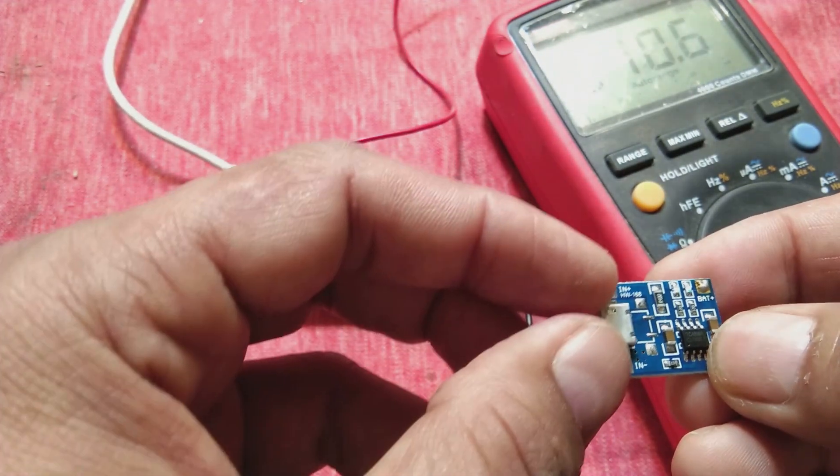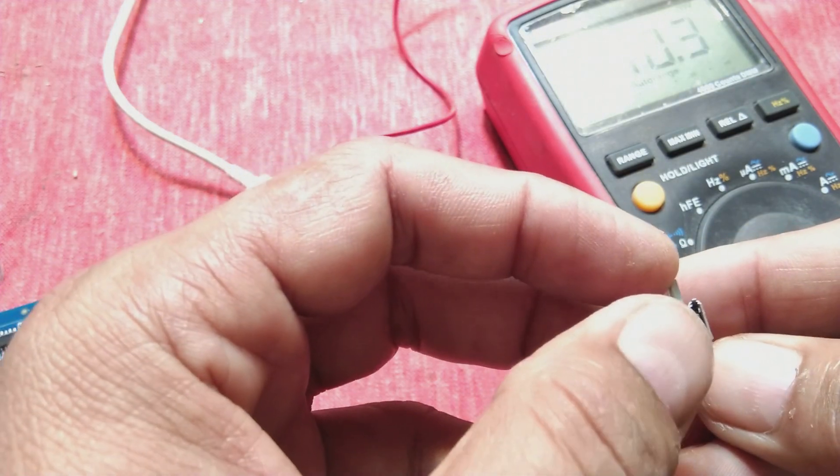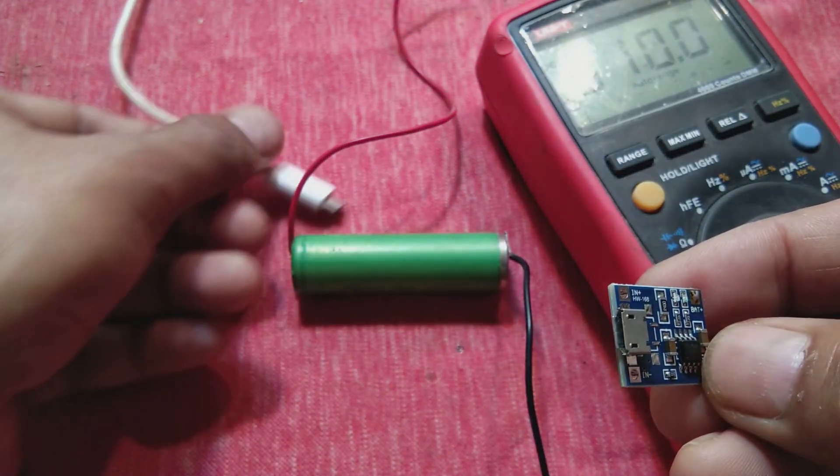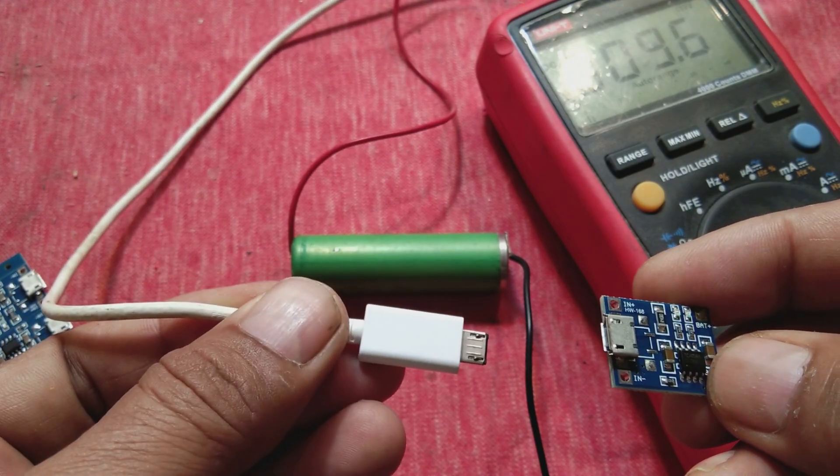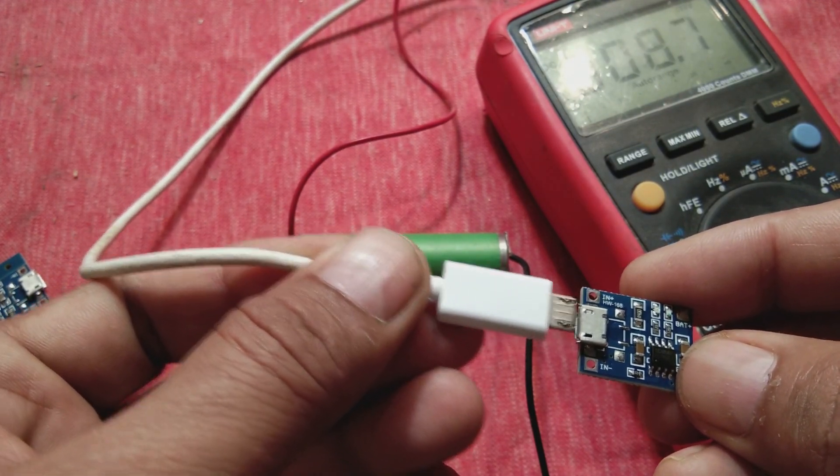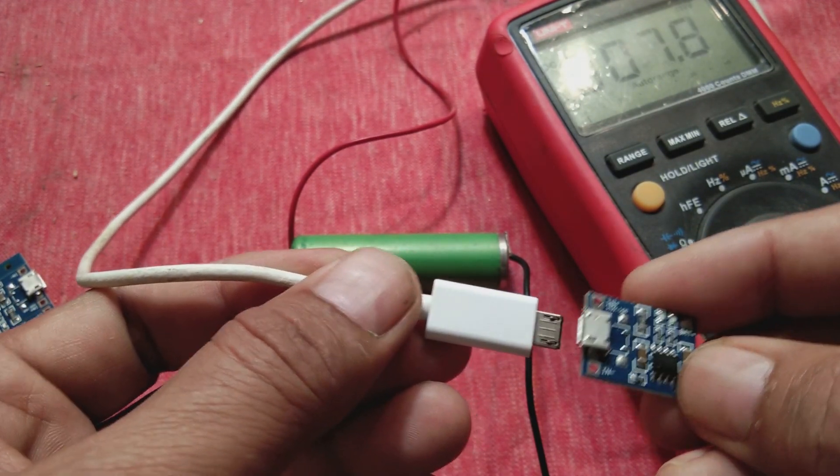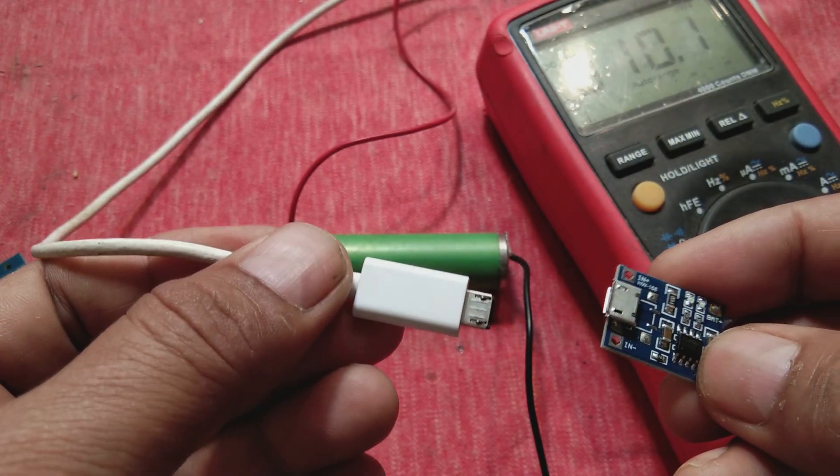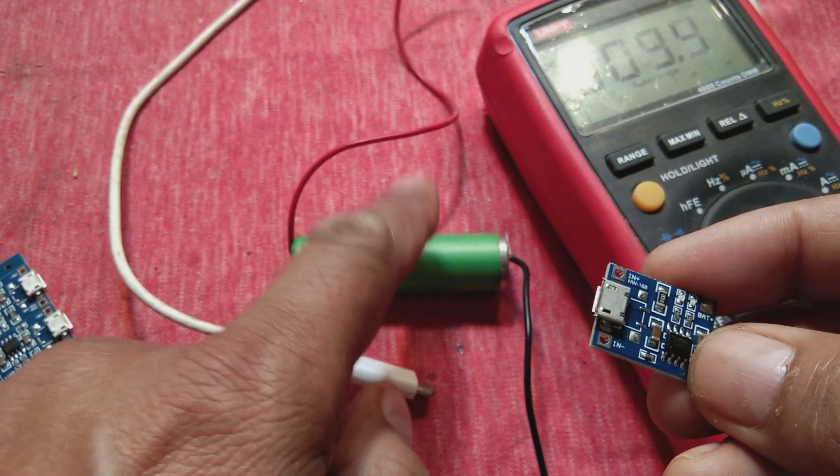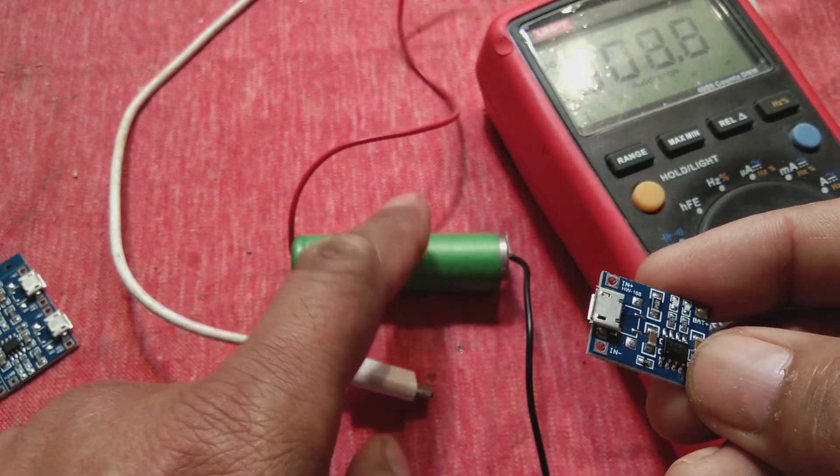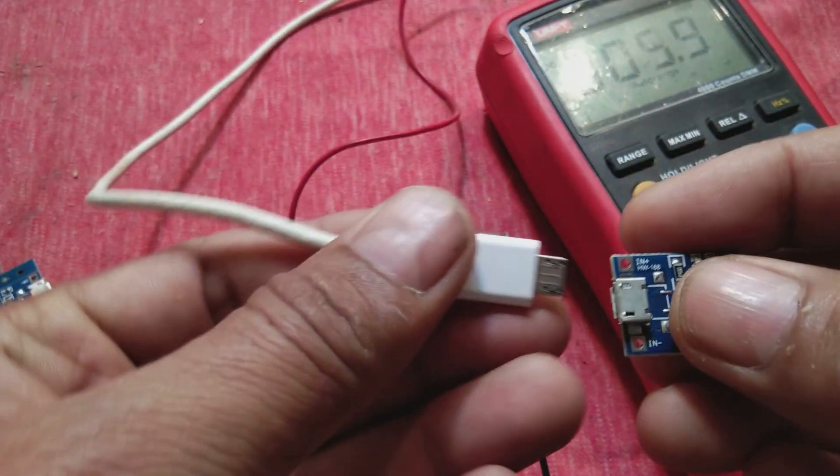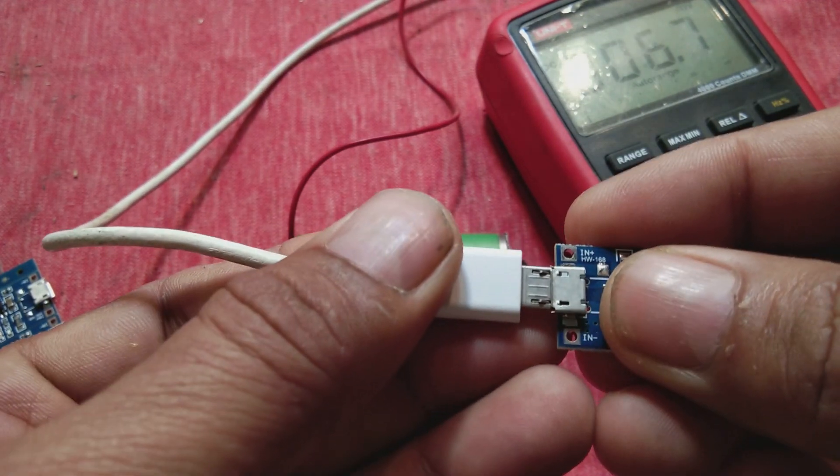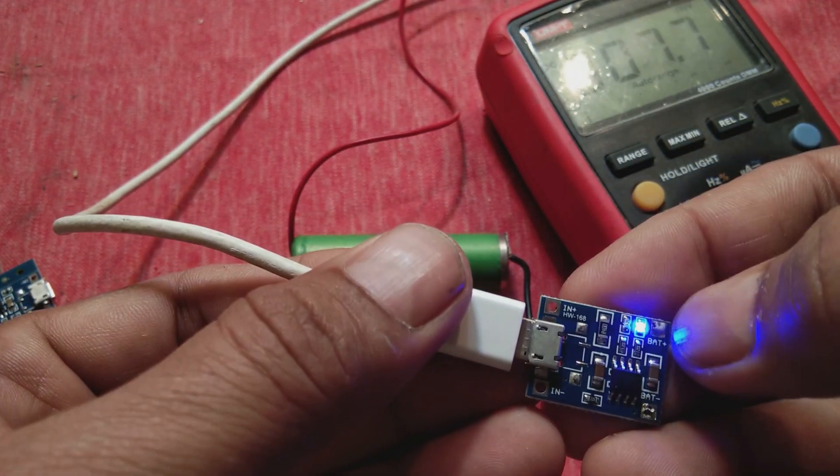There is a small micro USB jack provided. If you have an Android charger, you can plug it directly into this module and provide 5 or 6 volts to charge your lithium-ion or lithium-polymer battery. Now I'm going to plug this in so you will understand how it works.